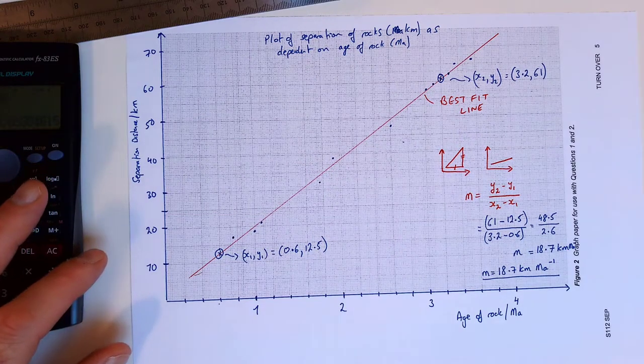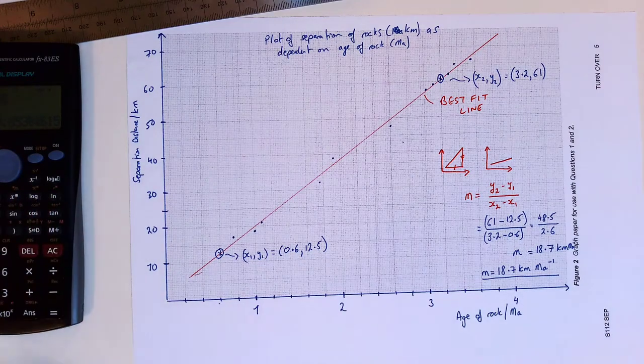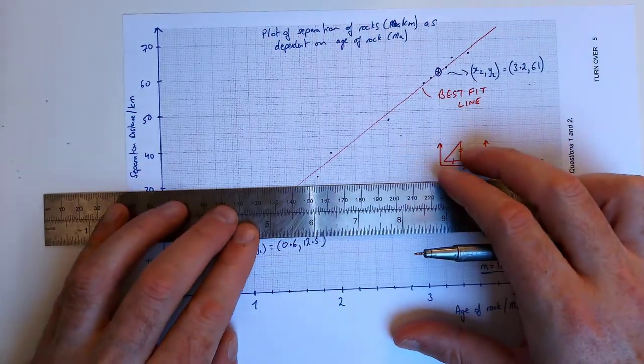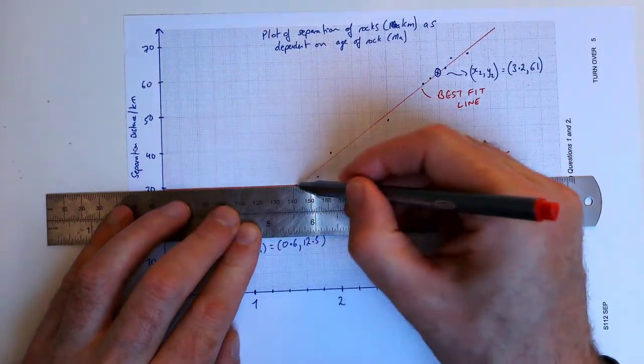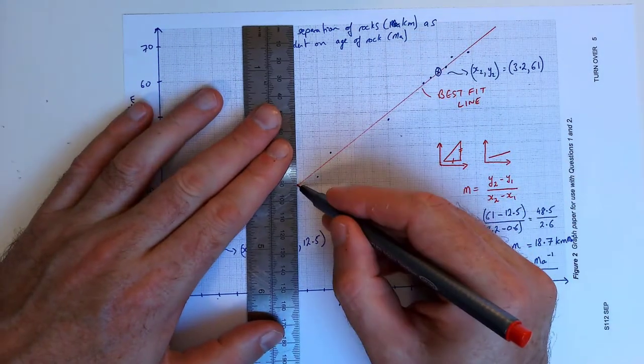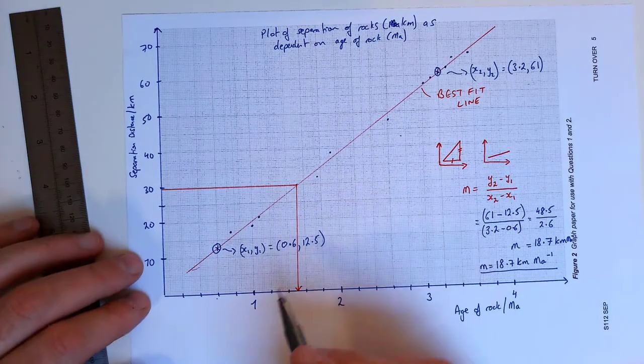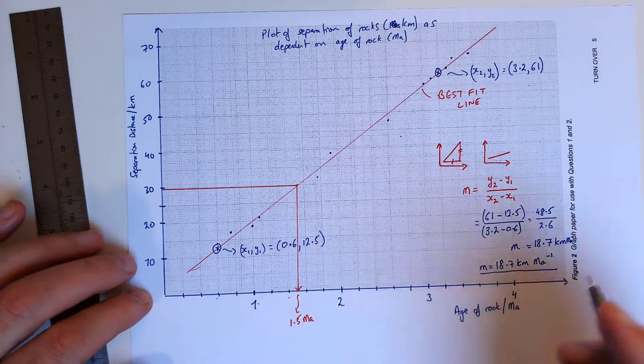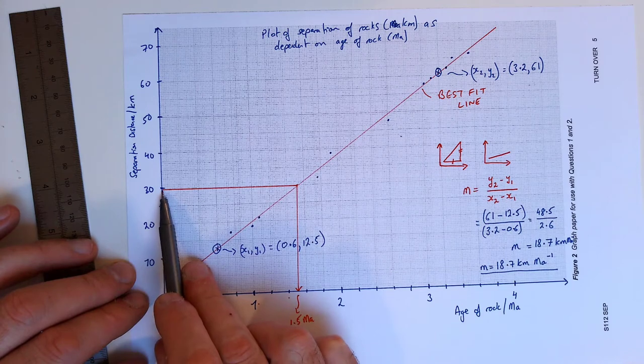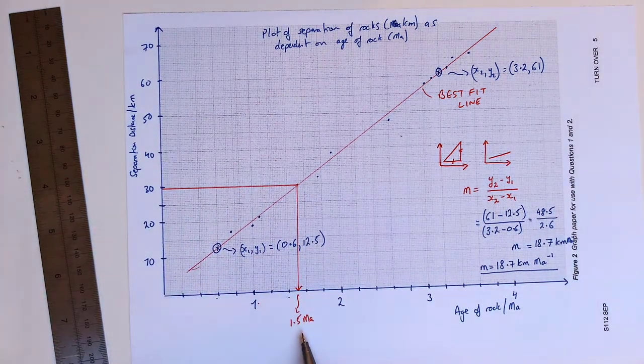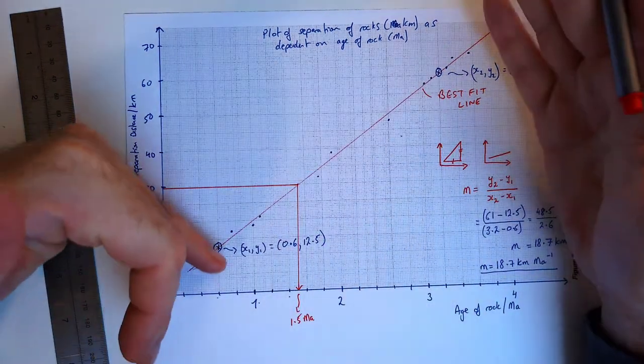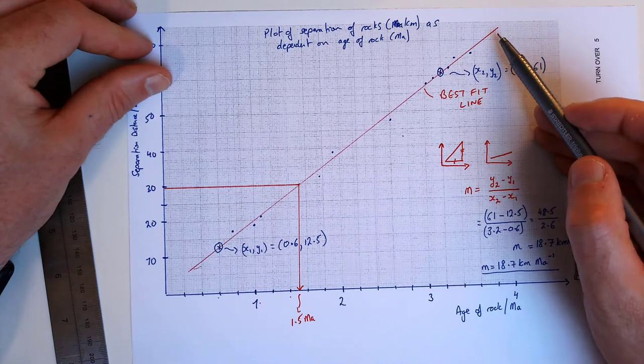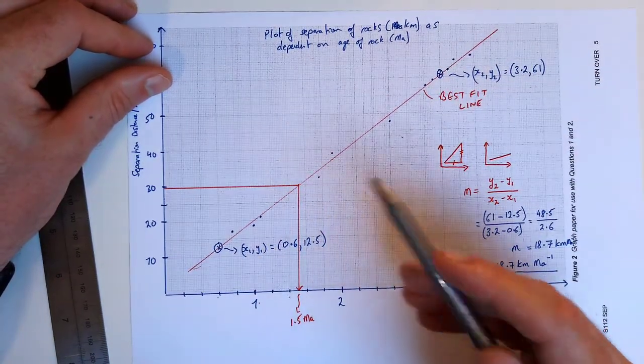So in this case we can use our graph. We'll just go to 30 kilometers, draw a straight line across, and then if we come down, that's 1.2, 0.4, 0.6, that's going to be 1.5. So the age of the rock when the separation distance was 30 kilometers is 1.5 million years. That's called interpolation. We're using information from within our data range to find the corresponding value, because this best fit line gives the overall trend of data. Even though we don't have this specific point, we can use the trend to find out some useful information.